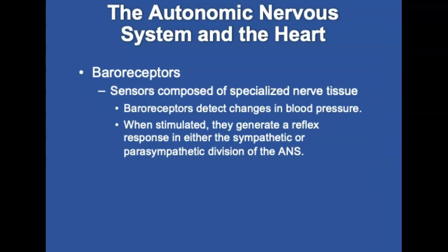Baroreceptors are sensors composed of specialized nerve tissue, also known as pressor receptors. They are found in the internal carotid arteries and on the aortic arch, detecting changes in blood pressure and generating a reflex response in either the sympathetic or parasympathetic divisions of the ANS. Sympathetic or adrenergic responses: if blood pressure falls, the sympathetic division constricts peripheral blood vessels, increases the heart rate, and increases the force of myocardial contraction. Parasympathetic or cholinergic response: if blood pressure rises, sympathetic stimulation is decreased and parasympathetic response is increased.